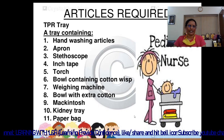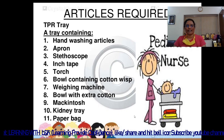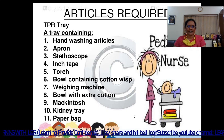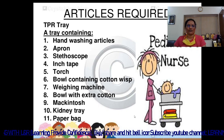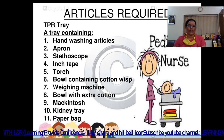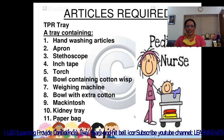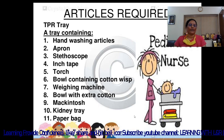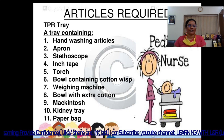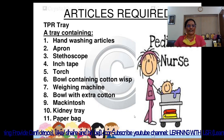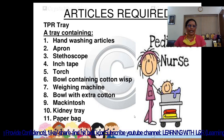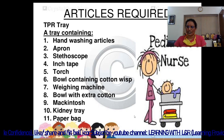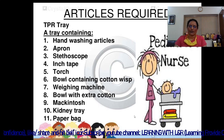The articles required for physical examination include: a TPR tray to assess vital signs, a tray containing handwashing articles, apron, stethoscope, inch tape, chart, bowl containing cotton vests, weighing machine, bowl with extra cotton, mackintosh, kidney tray, and a paper bag to dispose of used cotton.